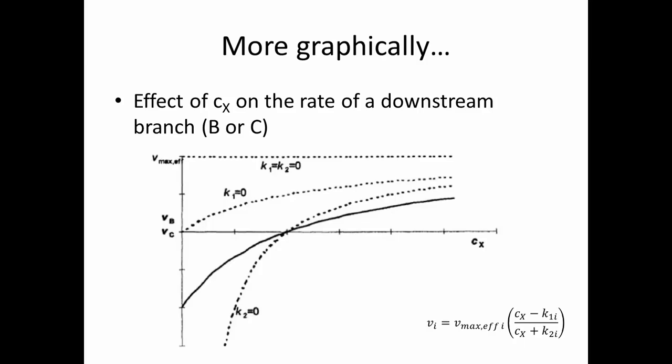Looking at the effect of concentration of X on the rate of downstream branches B or C, we see essentially the opposite behavior. The more concentration of X we have, the greater the velocity — the greater the rates of either B or C. Because A is making X, we see the opposite trend, whereas B and C are consuming X. If you give them more to consume, they're going to consume it and maximize their rate while doing so.